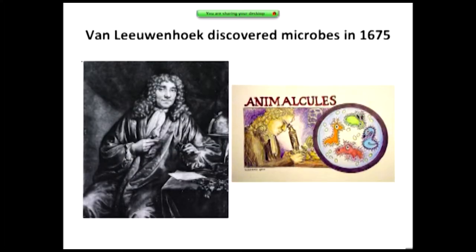We've known about microbes for a really long time — since the late 1600s, when Anton van Leeuwenhoek developed the microscope. Apparently in 1675, he saw these little moving things on his slide that he decided to call animalcules. He considered them the smallest unit of life. The story is that he discovered them by taking a little scraping off his teeth and putting it on a slide.